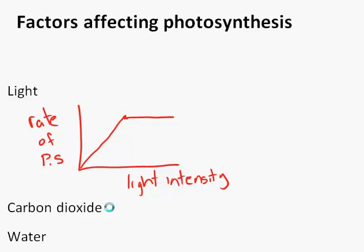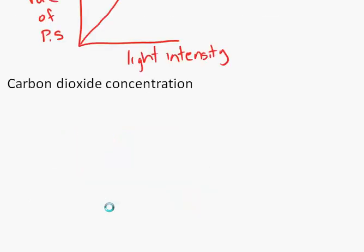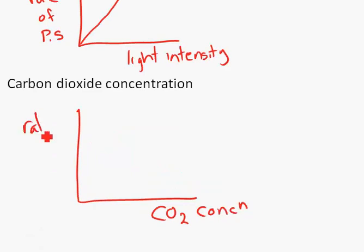We can also look at carbon dioxide concentration. As we get more and more carbon dioxide concentration, the rate of photosynthesis—more carbon dioxide, it goes faster and faster and faster until again we get to a point where you can't use it any quicker, and then it levels off.